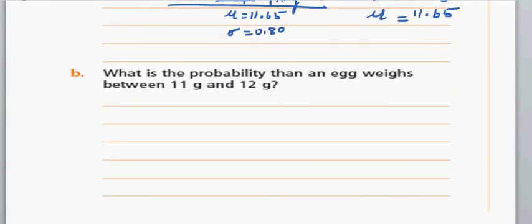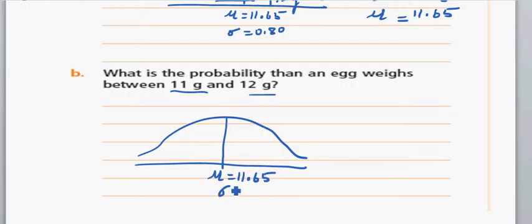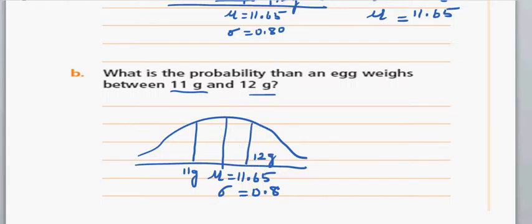What is the probability that the egg weighs between 11 and 12 grams? Draw a normal curve. The mu is 11.65 and the standard deviation is 0.8. 11 grams is here and 12 grams is here, so you want to find the area between these two intervals.